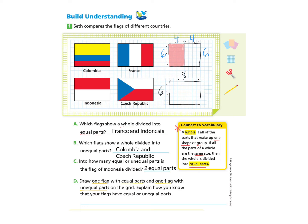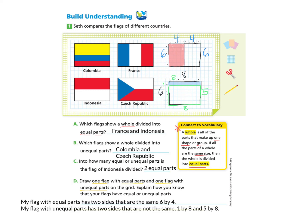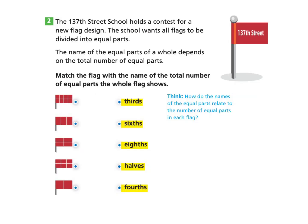For my unequal flag, I will color in one row blue — one square by eight blue. Now I have two parts: one blue and one white. They are not equal because one is one square by eight and the other white part is five by eight, so this part is much larger than the blue part — they are unequal parts. My flag with equal parts has two sides that are the same, six by four. My flag with unequal parts has two sides that are not the same: one by eight and five by eight.